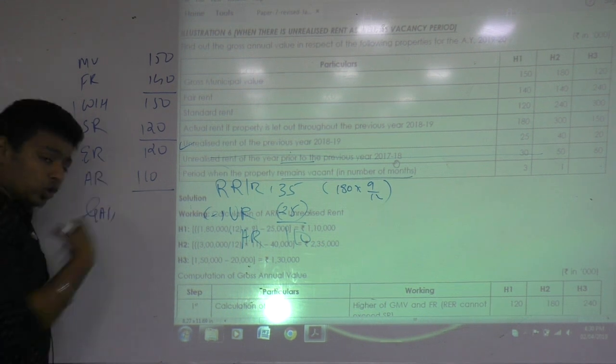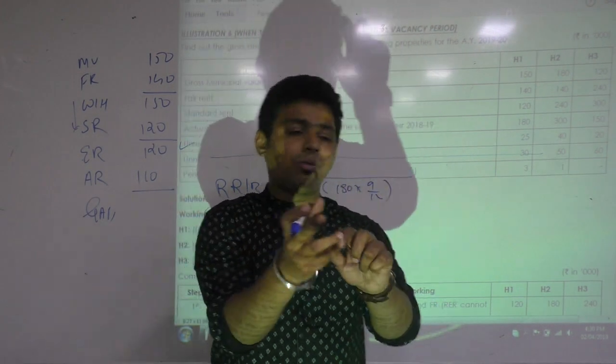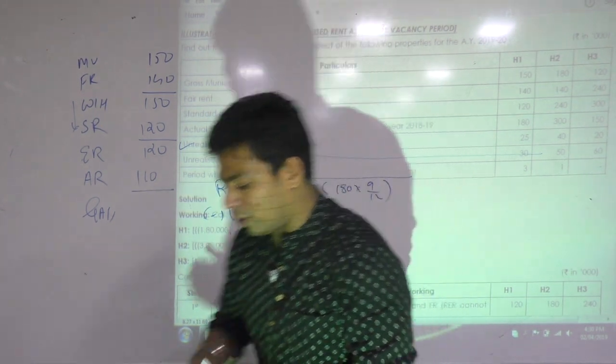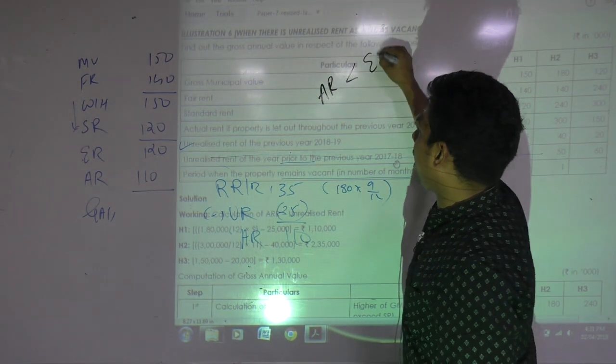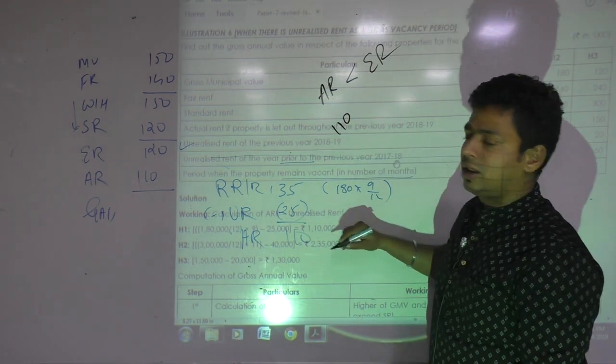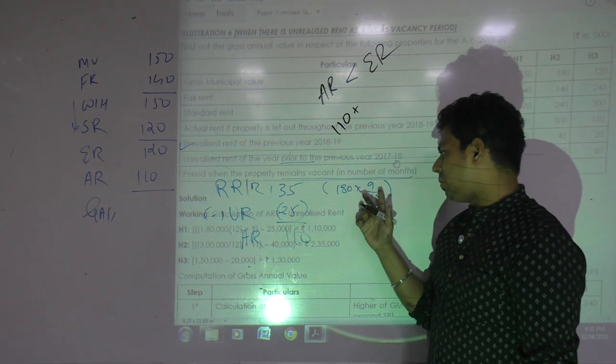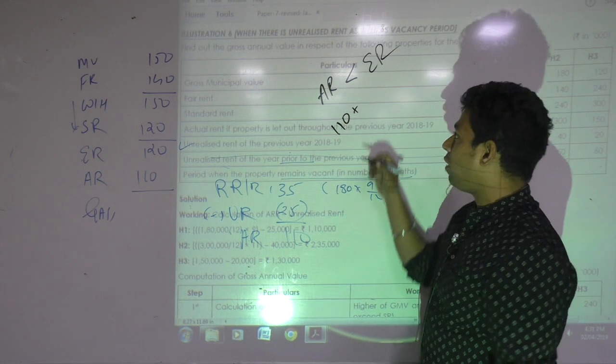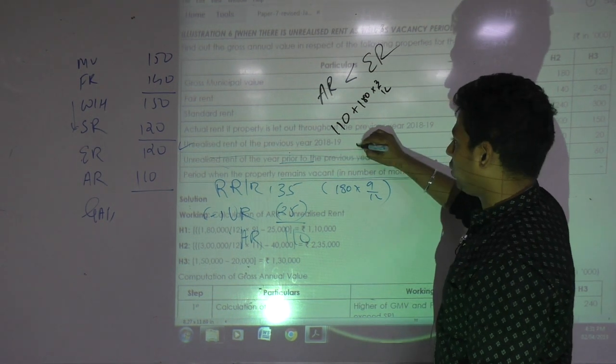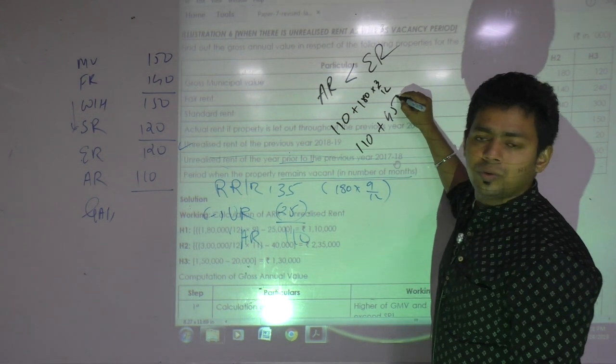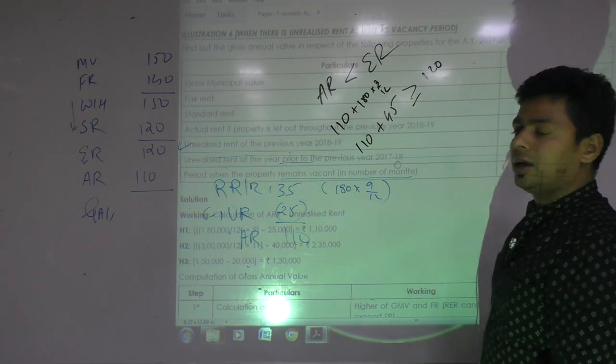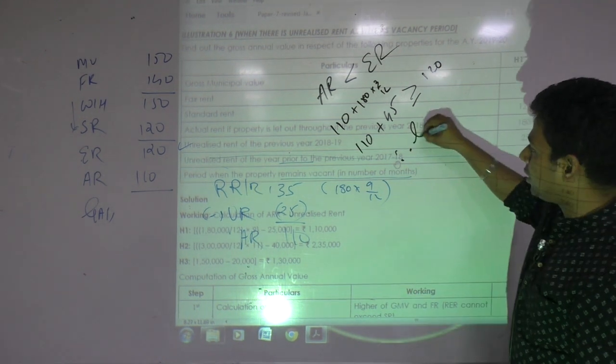This is not my actual rent. How will you compute actual rent if property was vacant for 3 months? If it was let out for whole year then 180, multiply by 9 divide by 12. What is my actual rent? 135. This is my rent received or receivable. Minus unrealized rent of previous year, how much? 25. So what is my actual rent? 110. If I write 110 here, what is my GAV? My AR is lower than ER, so what do we check? Whether assessee is genuine or not.